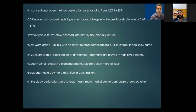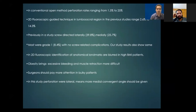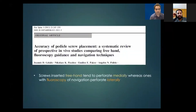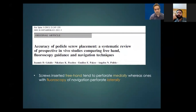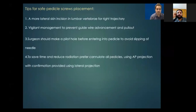In high BMI patients it is most difficult to find anatomical landmarks, so we should be very vigilant. Obesity brings excessive bleeding and muscle retraction becomes more difficult. In bulky patients, more attention should be given and we should converge more medially because screws tend to perforate laterally. One paper showed that freehand screws were perforated more medially, while those placed with fluoroscopy or navigation were perforated laterally. We must make sure to start laterally and go with medial convergence.